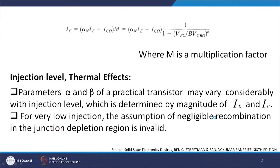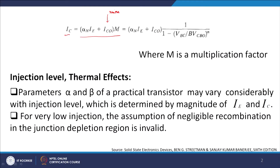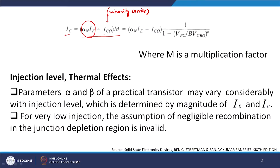As we left in the previous discussion, the collector current IC equals αN times IE, where ICO is basically my reverse bias minority current carrier concentration. The total collector current flowing through a circuit will always be a sum of the majority current carrier contribution plus the minority carrier contribution. The factor M is given by 1 divided by (1 minus VBC/BVCBO) to the power N, where N is an integer value. Depending on the value of M, we expect IC to be large or small.